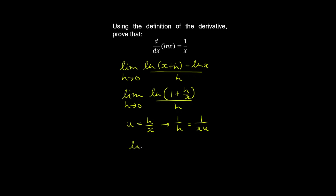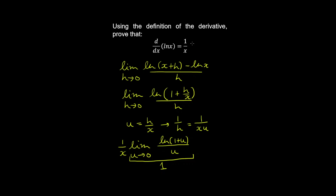We change the limit: as h goes to zero, u goes to zero. Substituting for one over h, we take one over x outside the limit and keep one over u inside the limit, with the natural log of one plus u in the numerator. This is a limit of zero over zero, so by L'Hôpital's rule this evaluates to one, giving us one over x. That proves that the derivative of the natural log of x is one over x.